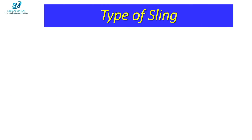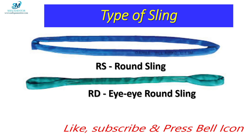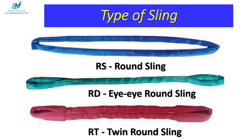Let's see what are the types of sling as mentioned in the specification. The 1st one is RS, which means round sling. The 2nd one is RD, which means eye-to-eye round sling. The 3rd one is RT, which means twin round sling.